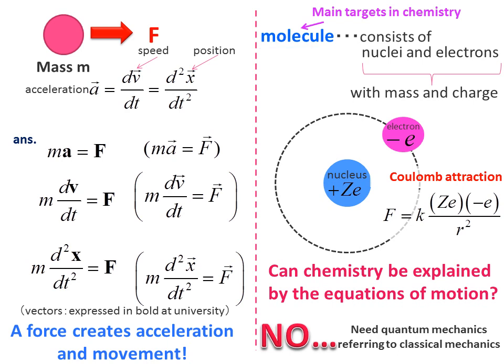Molecules contain atoms, but if we look at them in more detail, atoms consist of nuclei and electrons. Both nuclei and electrons have masses. And the nucleus has a positive and the electron has a negative charge.